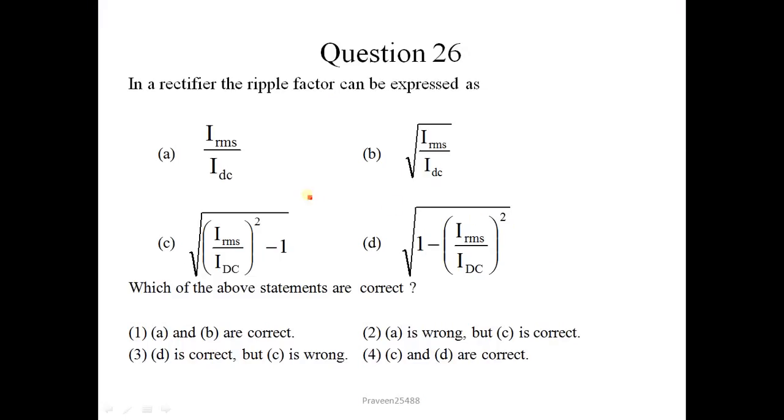Here is question number 26. In a rectifier, the ripple factor can be expressed as - Basically, ripple factor is the ratio of RMS value of the AC component to the average value of the DC component. In option C, IRMS upon IDC basically represents the form factor. And in option C, under root of IRMS upon IDC whole square minus 1, represents the ripple factor. The correct option is 2.